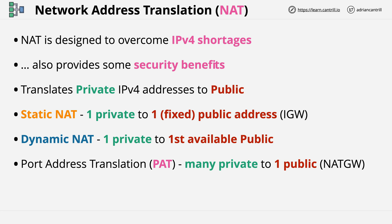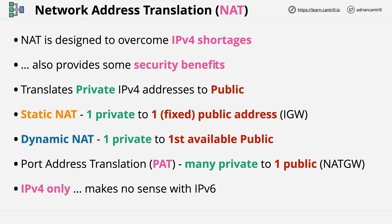Port address translation is the method that the NAT gateway or NAT instances use within AWS, so if you have any AWS experience, you'll recognize this process when I talk about the NAT gateway and NAT instances in a separate video. NAT as a process only makes sense for IP version 4. Since IP version 6 adds so many more addresses, we don't need any form of private addressing, and as such we don't need translation. IP version 6 generally means you don't need any form of network address translation.